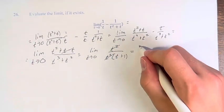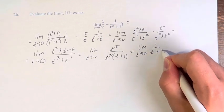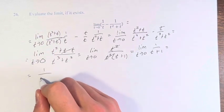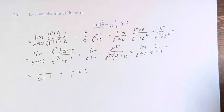The t squareds can cancel. We're left with the limit as t approaches 0 of 1 over t plus 1. Now we can plug in 0 because we will not be dividing by 0. 1 over 0 plus 1 is 1 over 1, which is 1. Therefore, the value of this limit is 1.